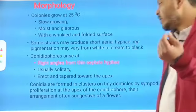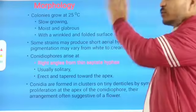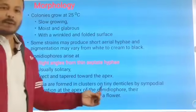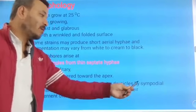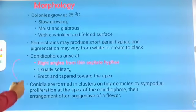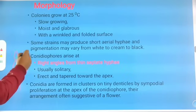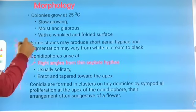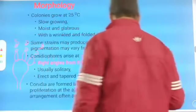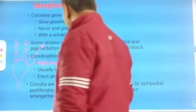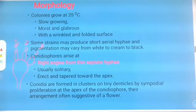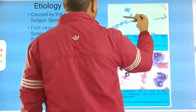Conidiophores are usually solitary, erect, and tapered toward the apex. At the apex, conidia are formed in clusters on tiny denticles by sympodial proliferation. This arrangement is often suggestive of a flower — the conidiophore with conidia looks like a flower.